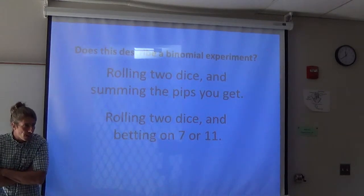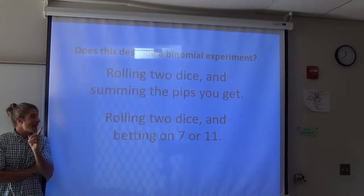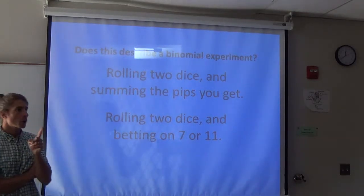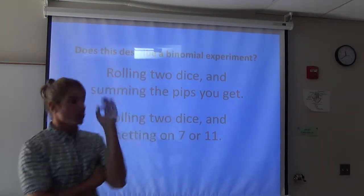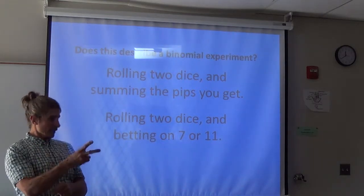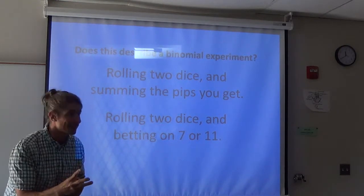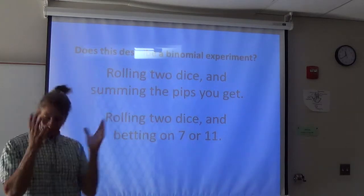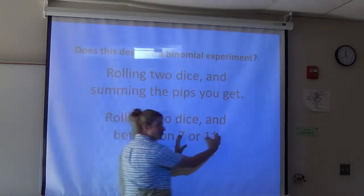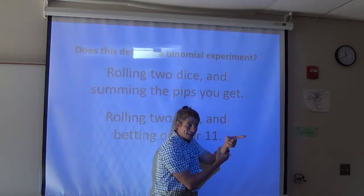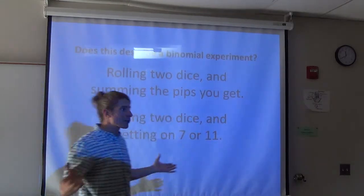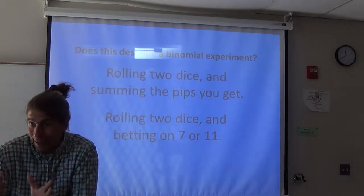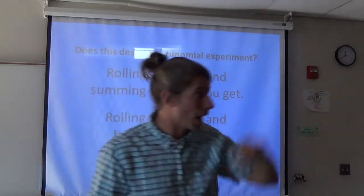What about betting on 7 or 11? You can actually say yes or no to this one. Some of you said no — because technically there are three outcomes: you either hit 7, get 11, or neither 7 nor 11. Those of you that said yes: you can view this as binomial by lumping 7 or 11 together under one probability, and then not getting 7 or 11. I like making things binomial if I can because it makes the math easy. You can make it trinomial — absolutely.